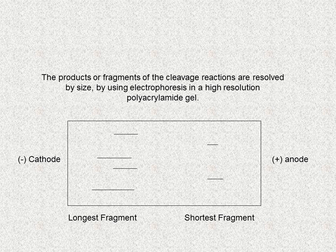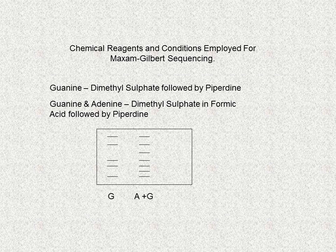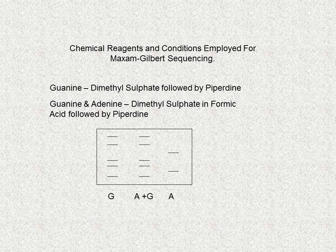The products or fragments of the cleavage reactions are resolved by size using electrophoresis in a high-resolution polyacrylamide gel. The chemicals used for cleavage of guanine bases are dimethyl sulfate followed by piperidine. Also, dimethyl sulfate and formic acid followed by piperidine are used to cleave guanine and adenine bases. Therefore, from the autoradiograph we can deduce the adenine bands, and from these two reactions we can identify the positions of the adenine and guanine bases in the DNA molecule.